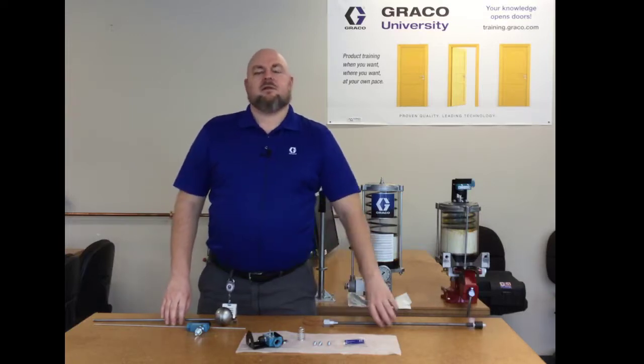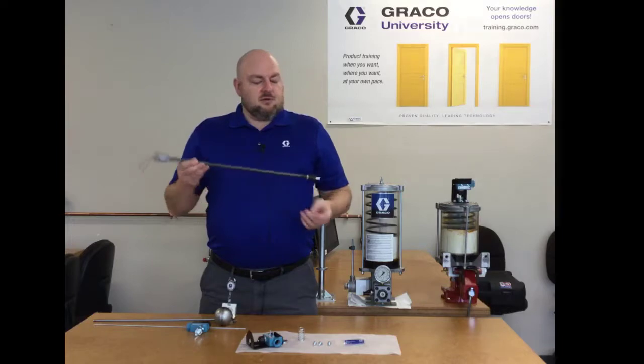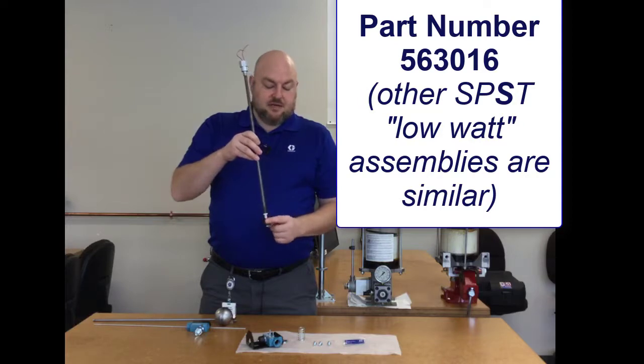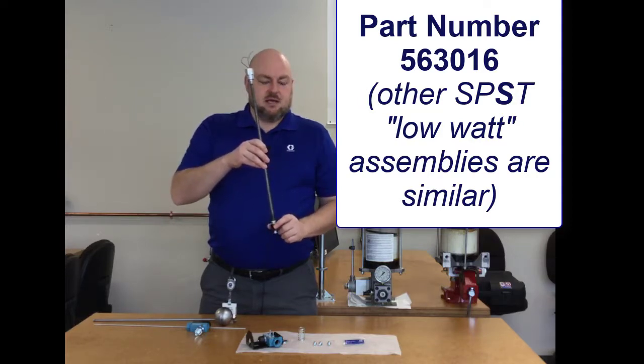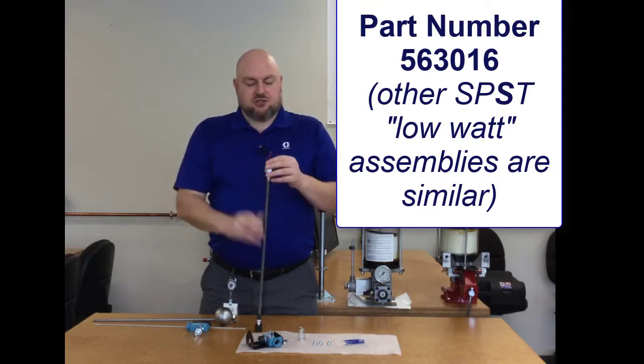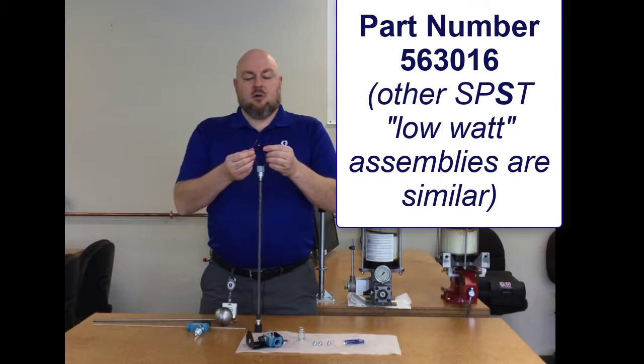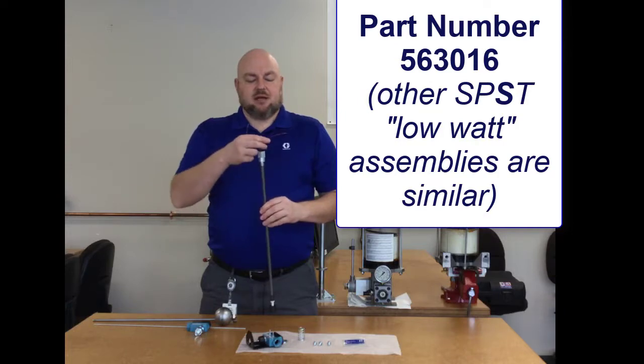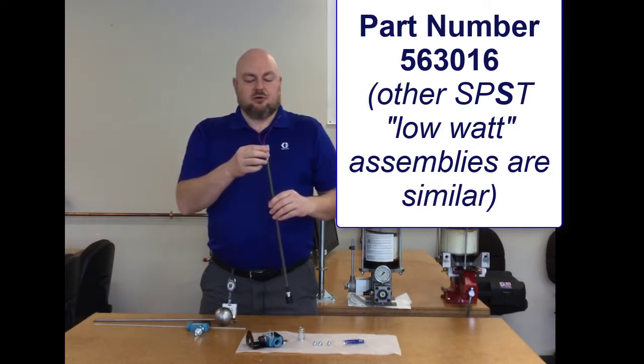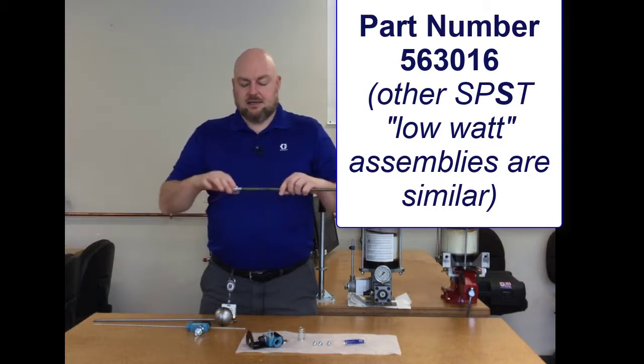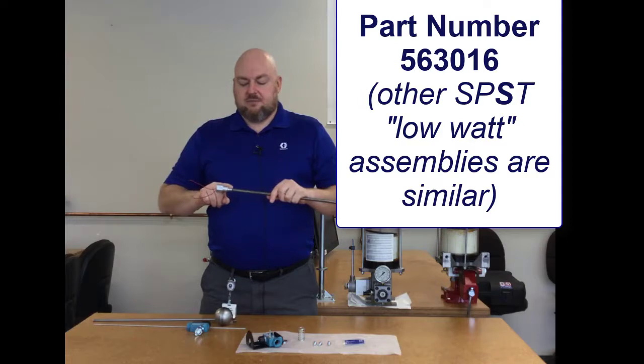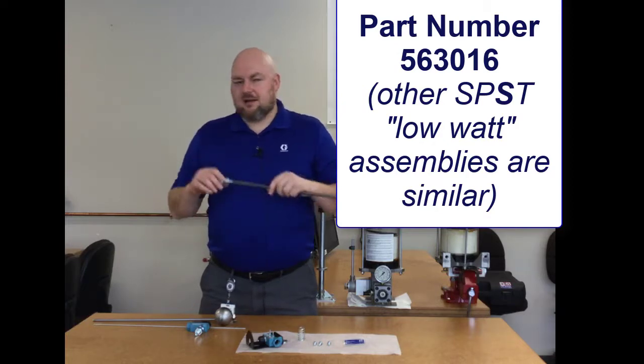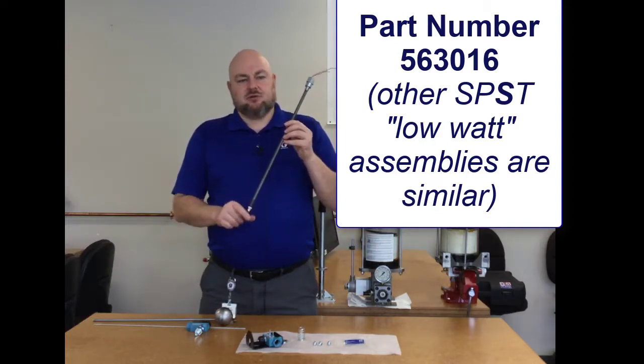For oil there are a couple of different options. The most economical option is this simple float where there's just a little float on the bottom. The float itself can be removed and flipped over if you want to change the normal state, so you can set this up to be normally open or normally closed. There are just two wires coming out the top and they're both the same color because it doesn't matter which way you wire it. It's just a dry contact switch making and breaking a circuit, so all you got to do is hook up your two wires to your controller or your PLC and send some power through that. These things mount on a 1¼ inch NPT thread and there's a pipe plug in the top of each reservoir on the oil reservoirs. This is your more economical option, just a real basic float switch.